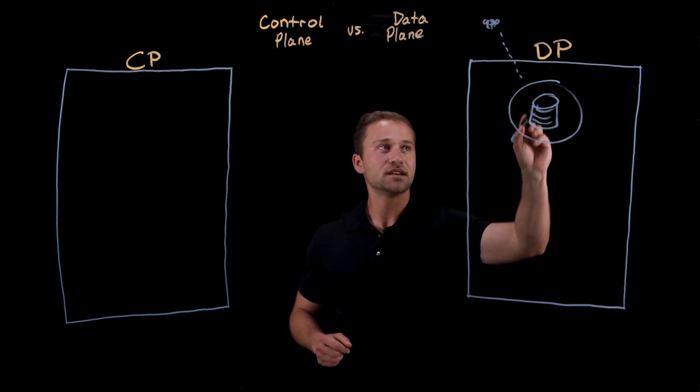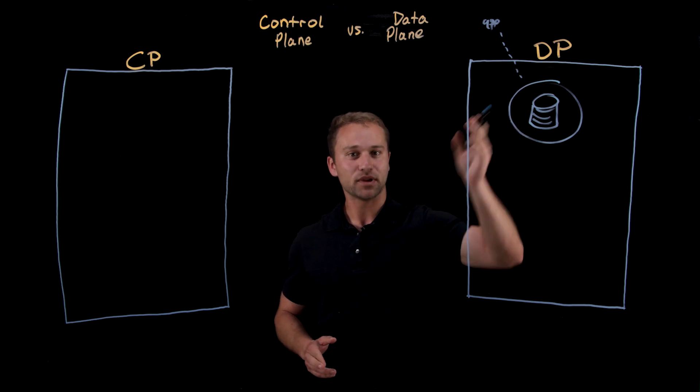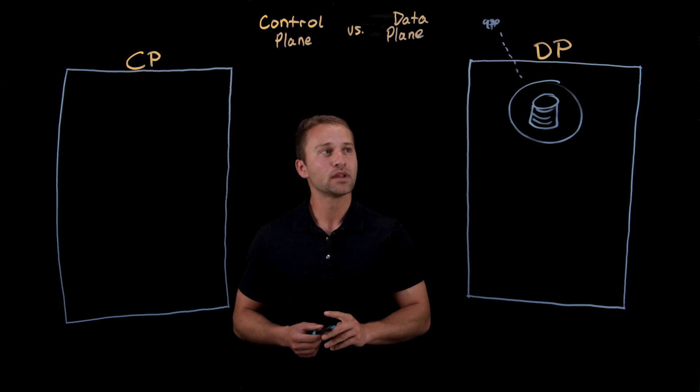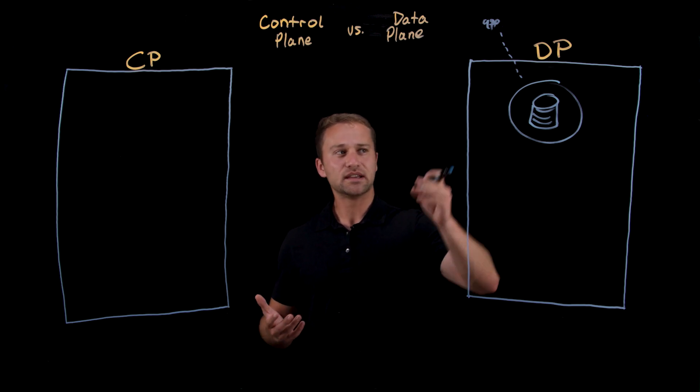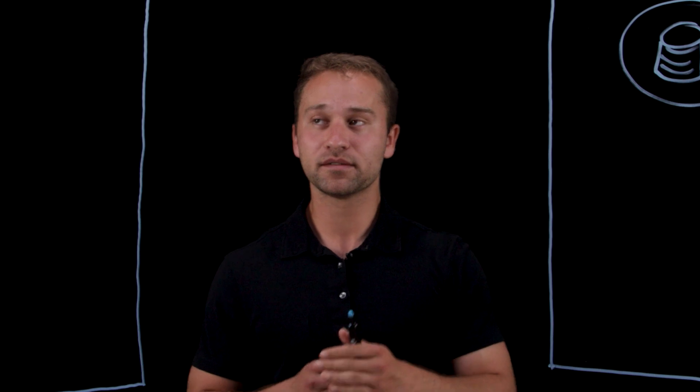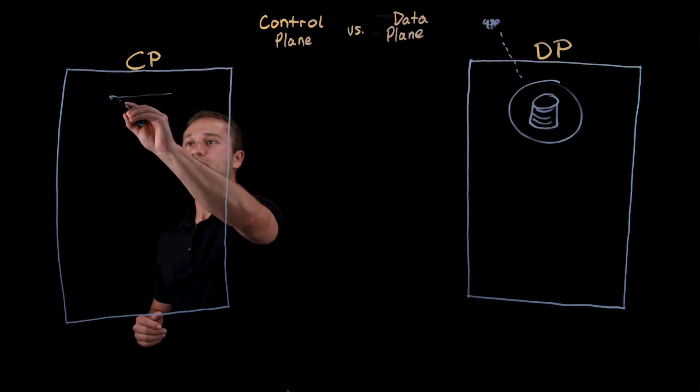Now, this instance is going to be running on our data plane infrastructure. The user can pull data from it, write data to it. But when they want to interact with the instance itself, the service that we're running on their behalf, they're going to want to interact with an API.